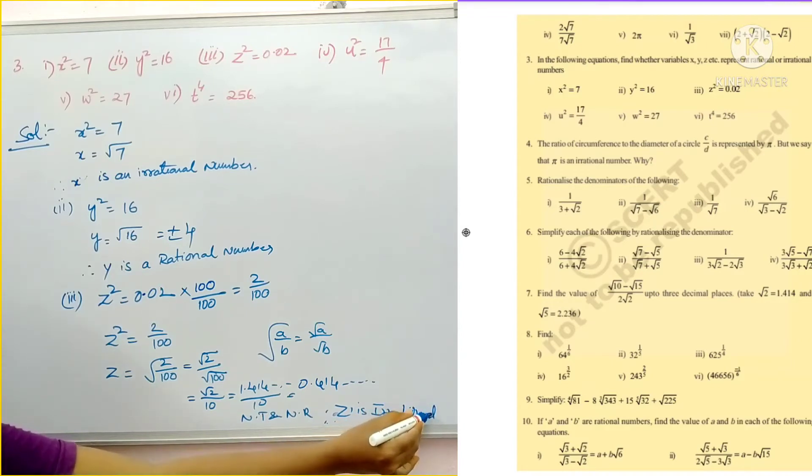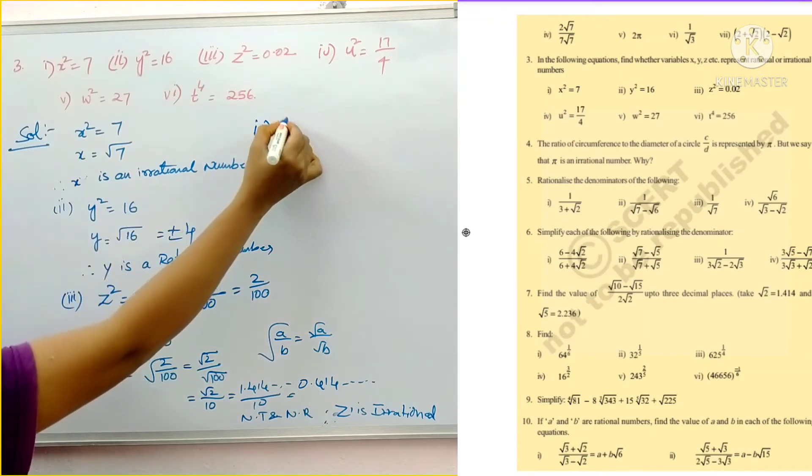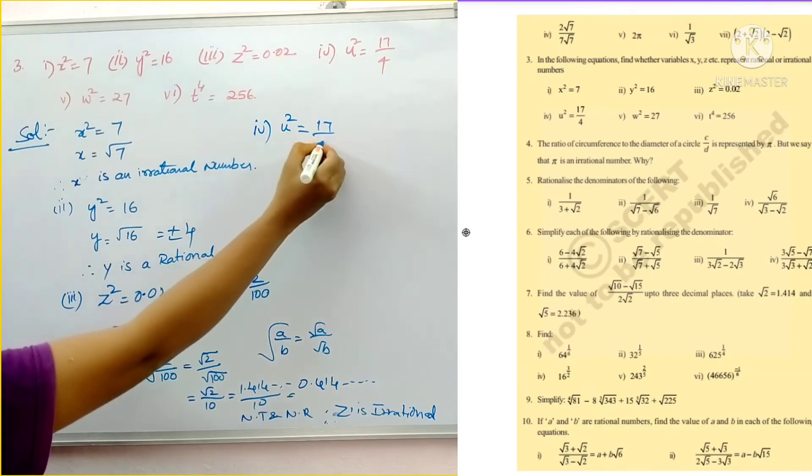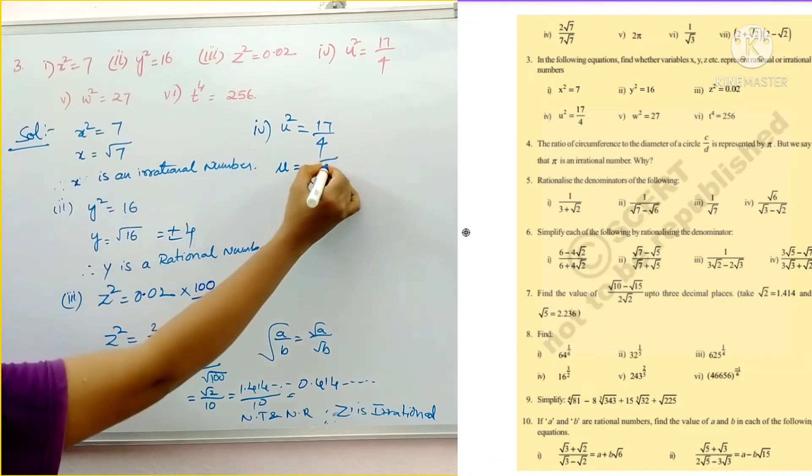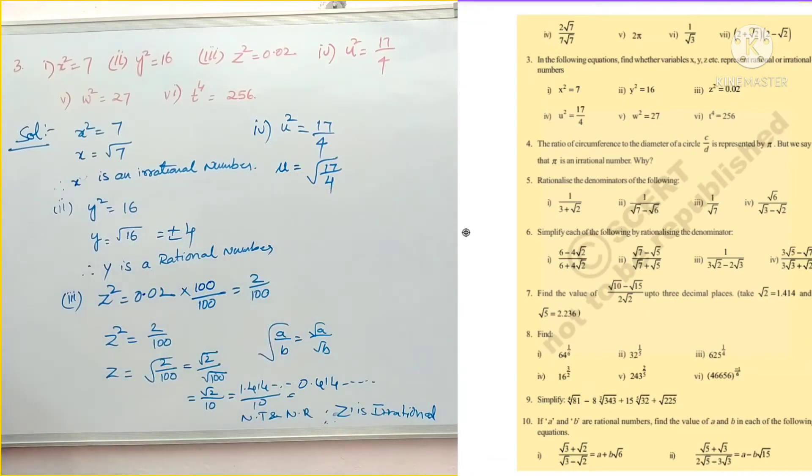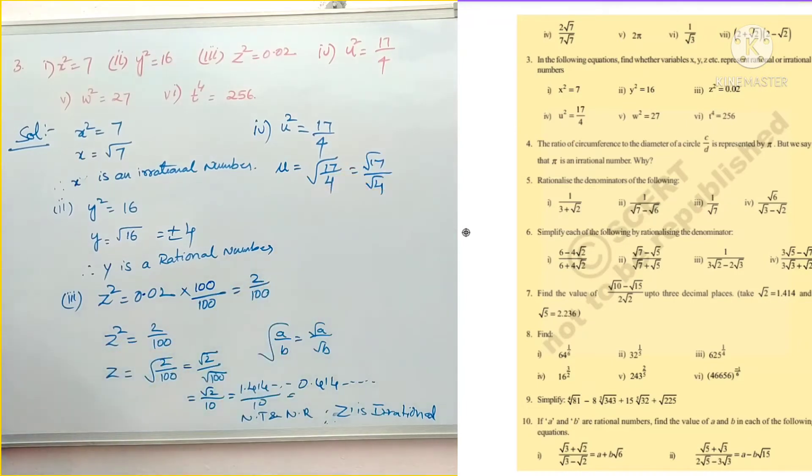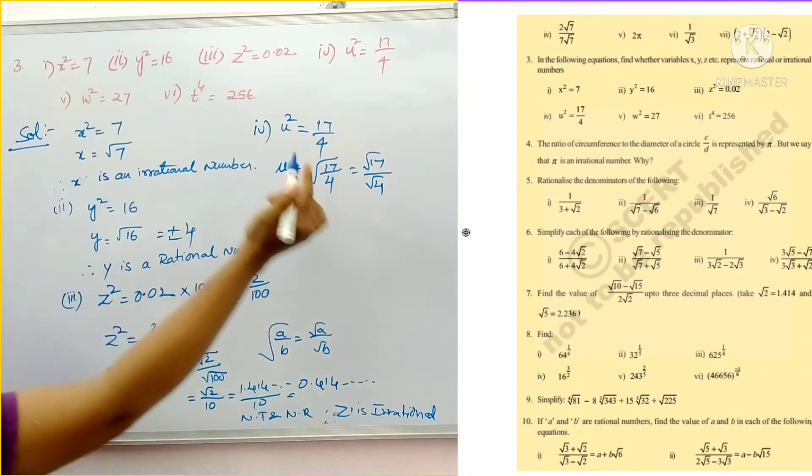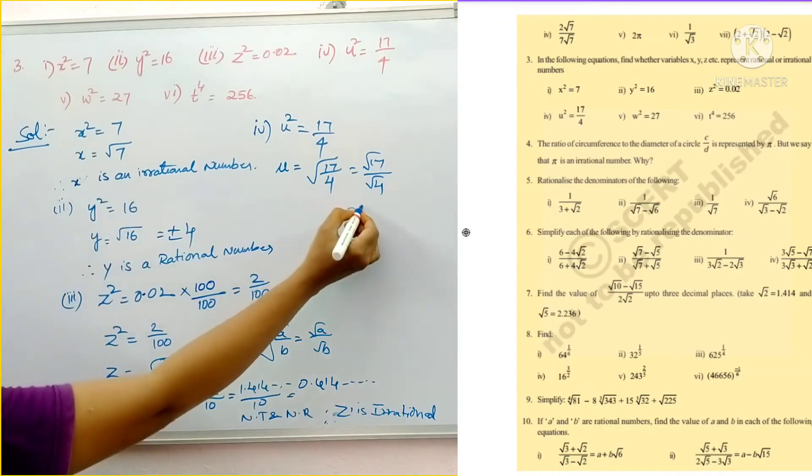So z is an irrational number. At our fourth one, u square is equal to 17 by 4. Then what is the number of u? Square root of 17 by 4. Then it will be square root of 17 by square root of 4. So 17 is a prime number. It is clearly irrational number.